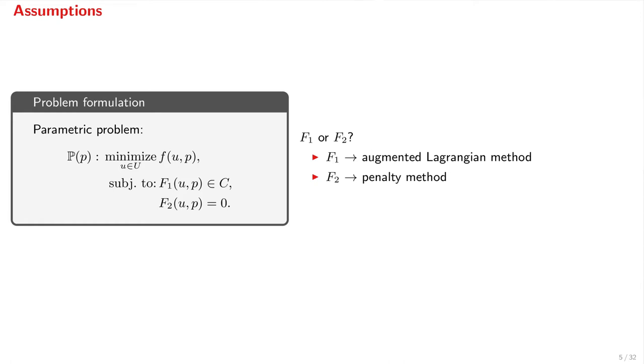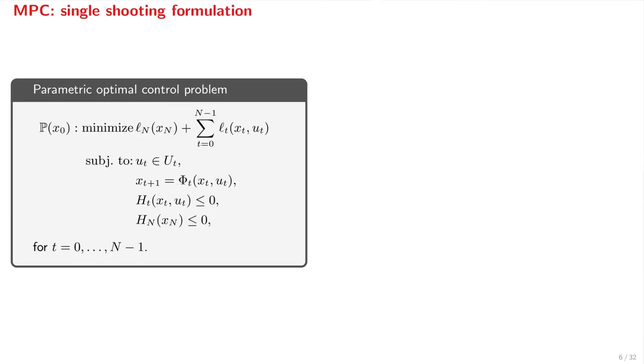and these can be used to model obstacle avoidance constraints in optimal control problems. The key difference between F1 and F2 constraints is that we treat them differently in the solver. F1 constraints are treated with augmented Lagrangian type updates, whereas F2 constraints are dealt with using penalty updates. Often, we can model a constraint with either F1 or F2.